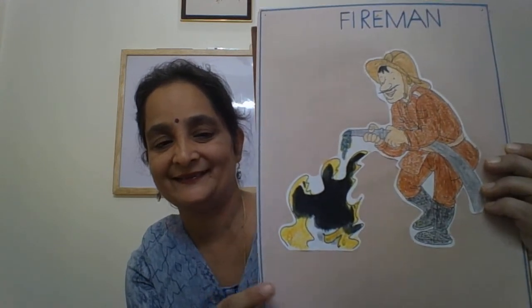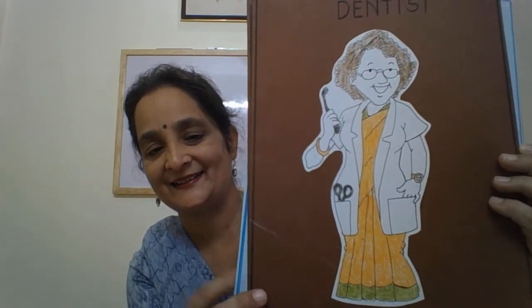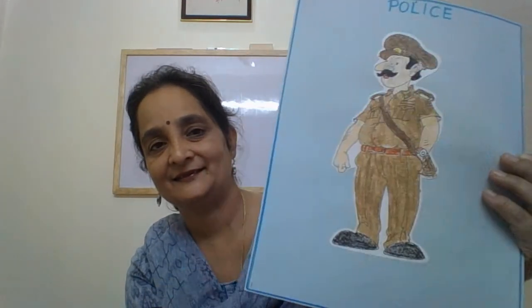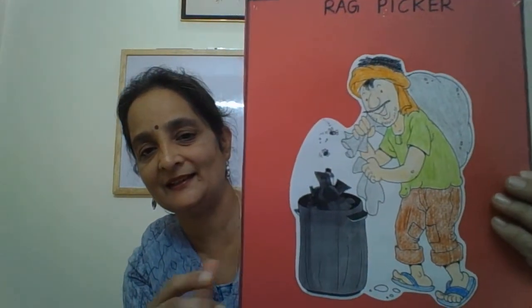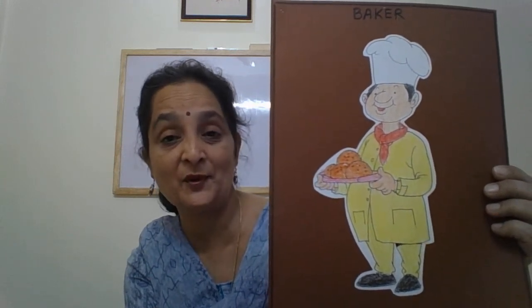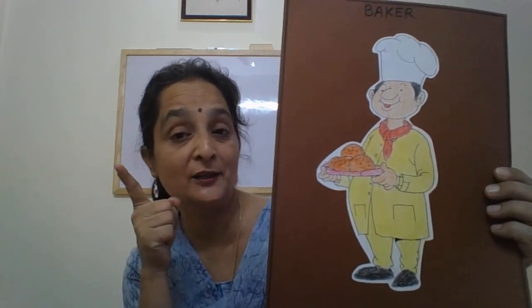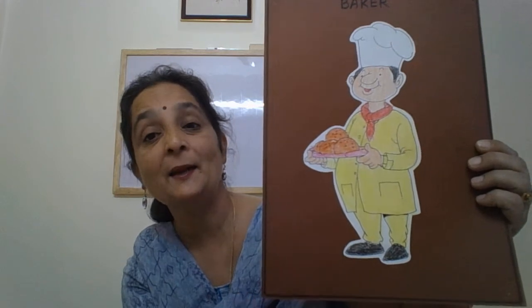Here are they. Picture of a fireman. She is a dentist. She is a teacher. He is a police. He is a rat picker. And he is a baker. You remember I taught you the poem Pat-a-Cake, Pat-a-Cake? And I told you who bakes the cake? A baker bakes the cake. So he is the baker.